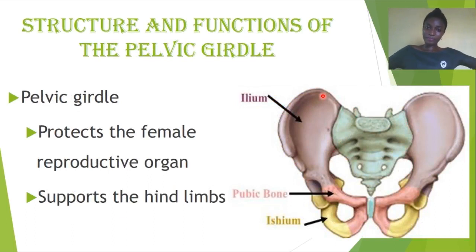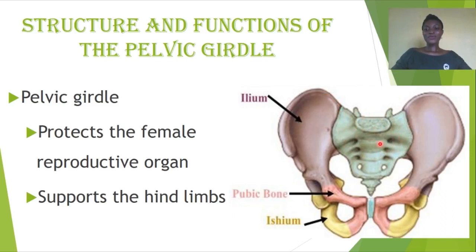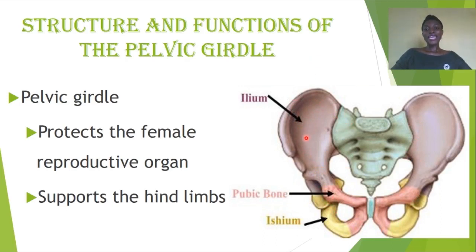Moving on, the next part of the appendicular skeleton is the pelvic girdle, located in our hip region. The pelvic girdle attaches to the sacral and caudal vertebrae of the vertebral column. The pelvis is made up of three parts: the ilium, the ischium, and the pubis — or pubic bone.